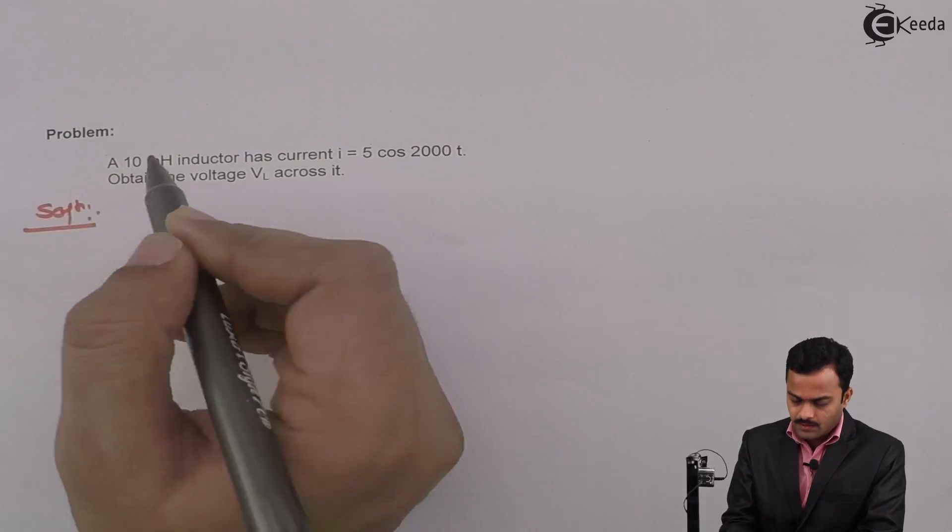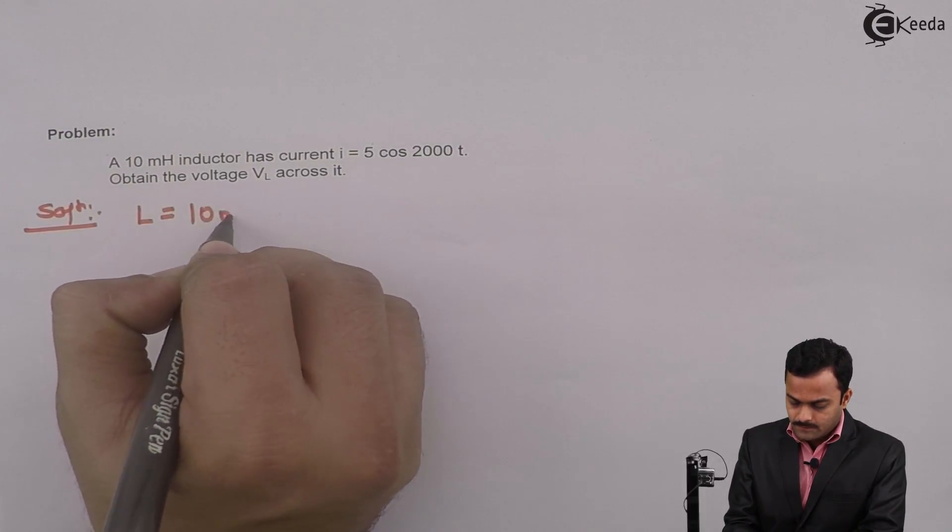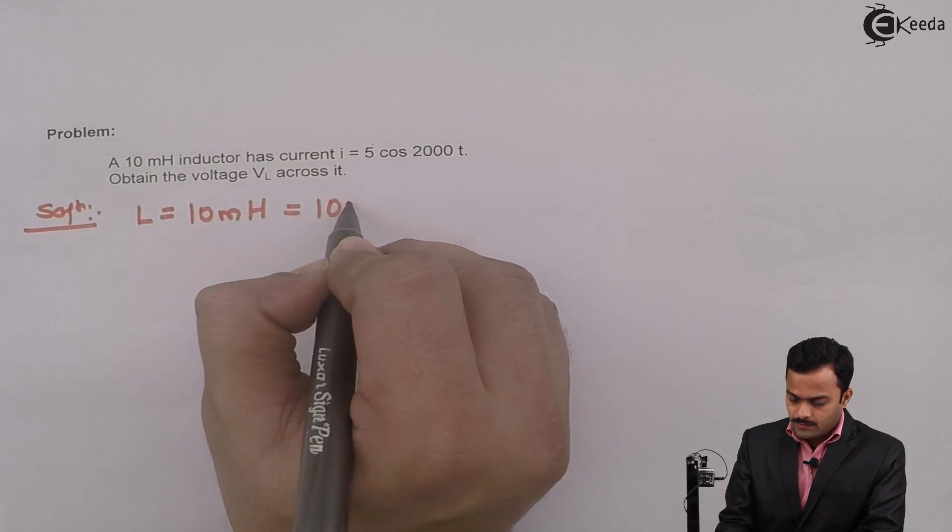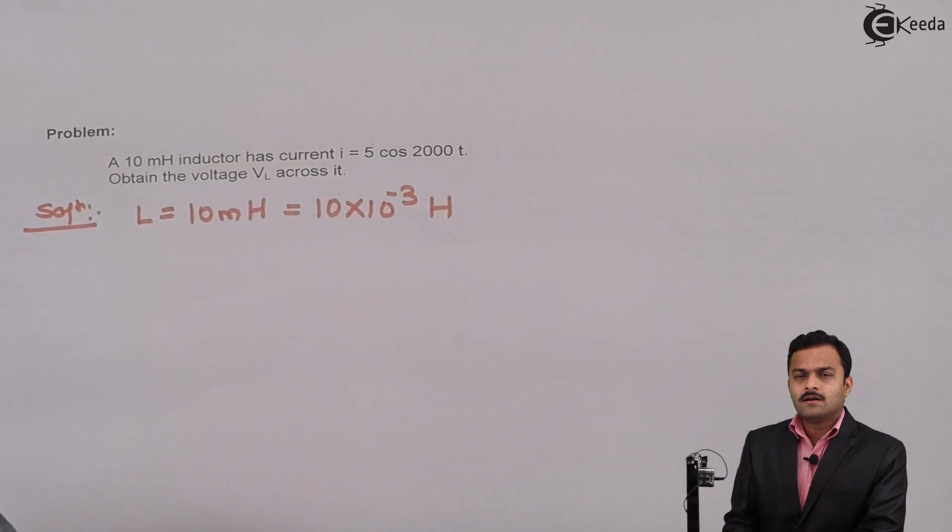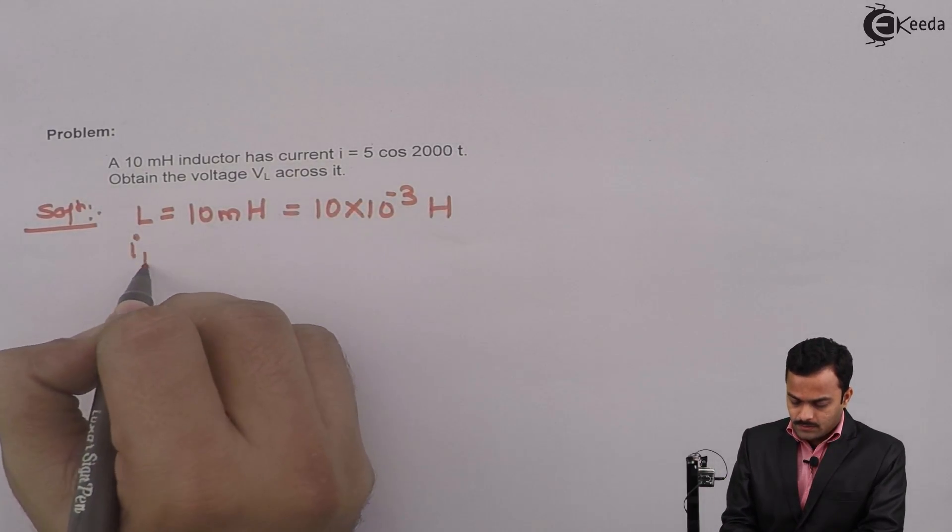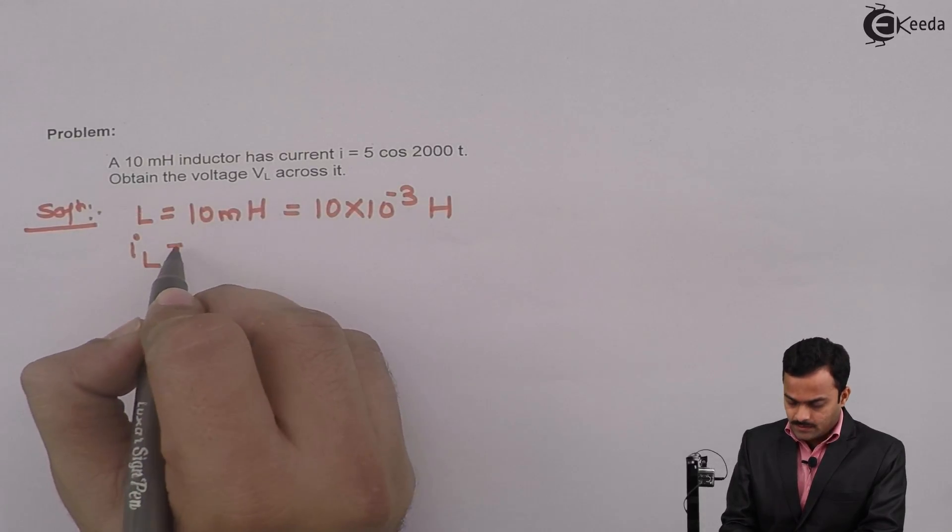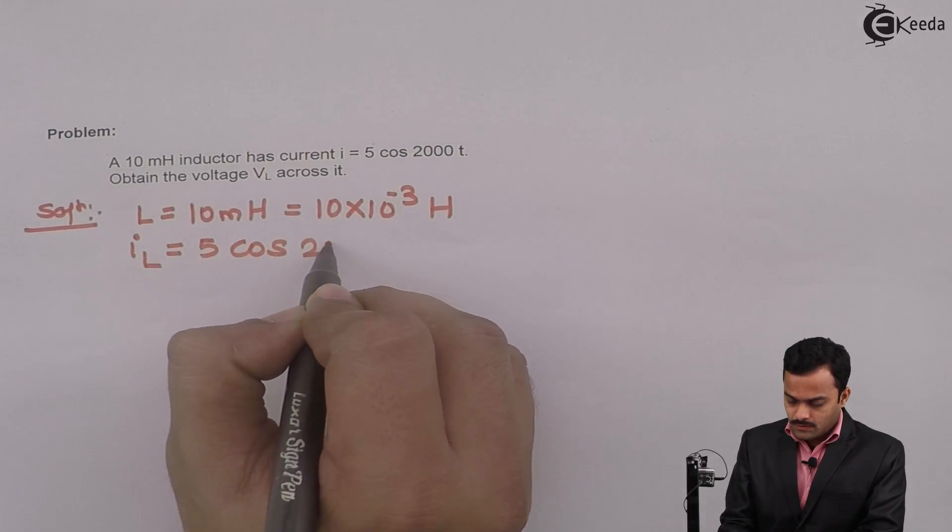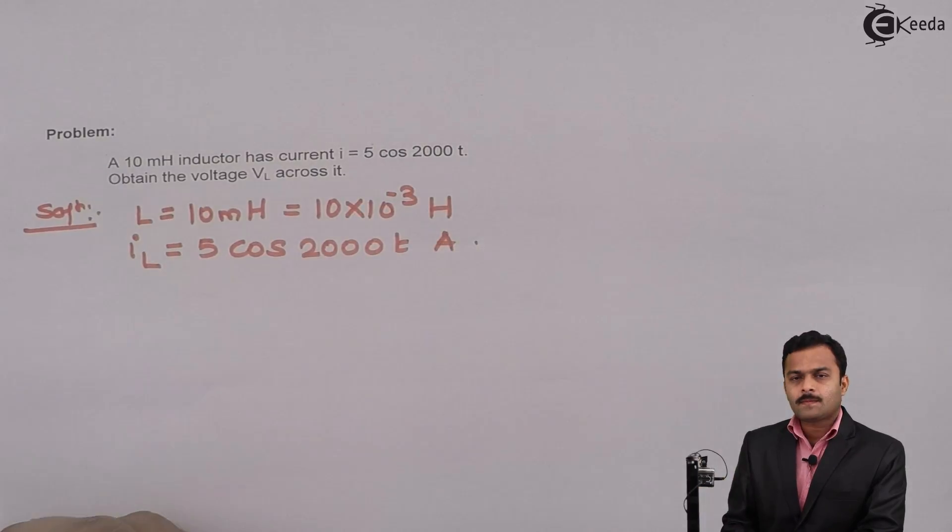The inductor value is given as 10 millihenry, so it is 10 multiplied by 10 raised to minus 3 Henry. The current equation I'll write as I_L(t) because it's a current flowing through the inductor, equal to 5 cos 2000t ampere.